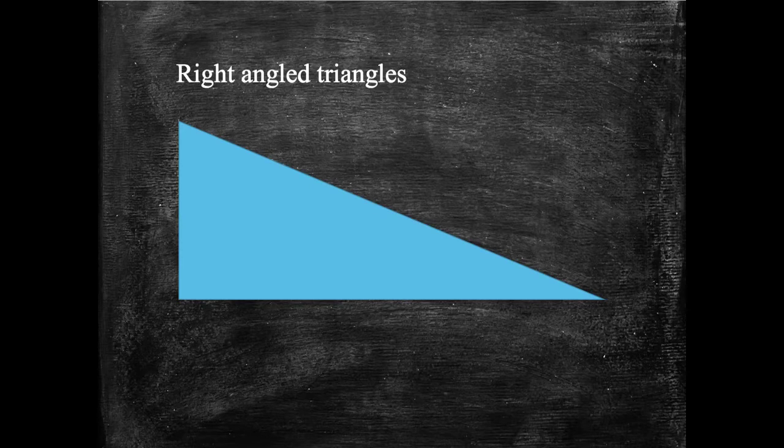As a very quick recap then, let's think about labelling the sides in a right-angled triangle. Here's your right angle. Let's say we've got a missing angle down here. We often use the Greek letter theta for the missing angle.